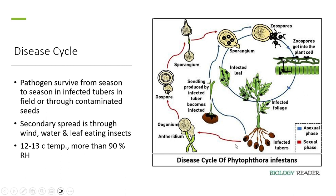In the sexual phase, oogonia and antheridia — the male and female sexual spores — are produced. When oogonium and antheridium meet, it leads to the production of oospores. The oospores then form sporangia, which restart the disease cycle.